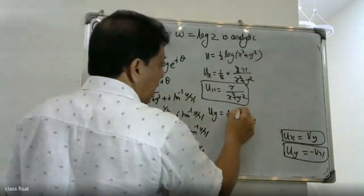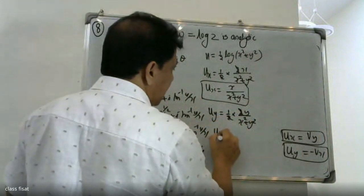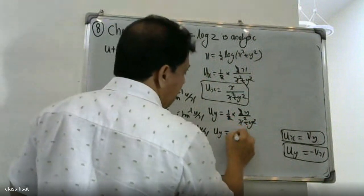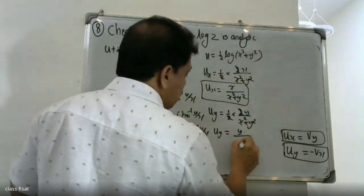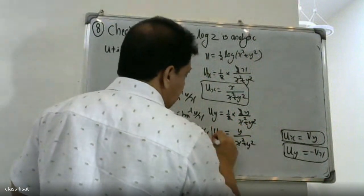Now differentiating u with respect to x: Ux is equal to (1/2) log(x² + y²), so Ux equals (1/2) into (1 over x² + y²) into 2x, which simplifies to x over x² plus y².